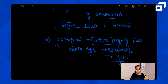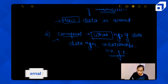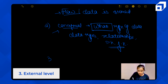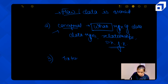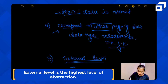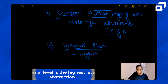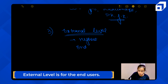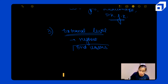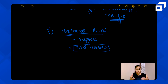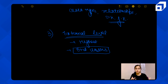The third level is the external level, which is the highest level of abstraction. It is designed for end users — the users who are viewing the database. For example, for students we have different views of the database.